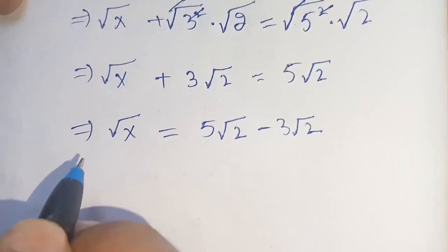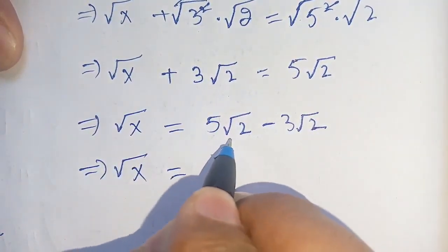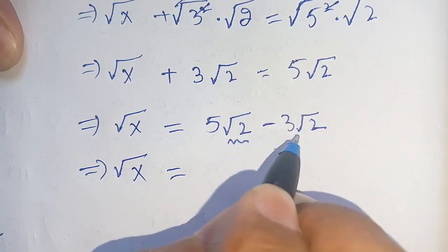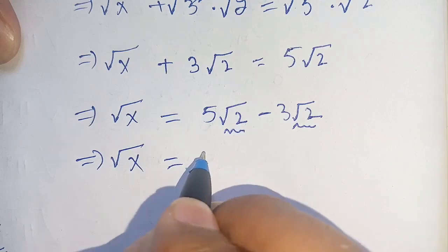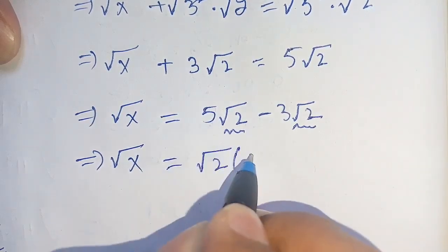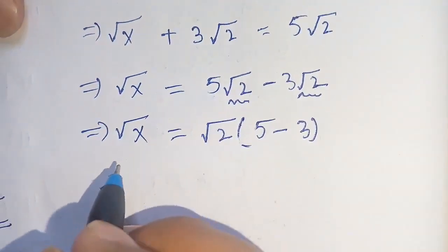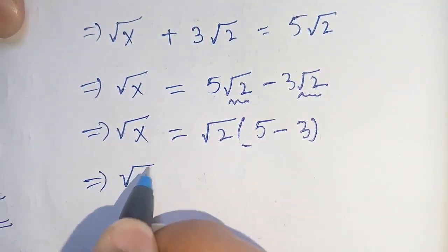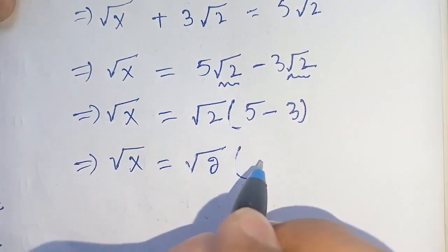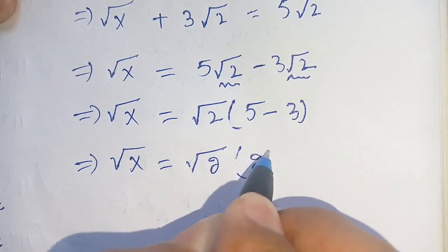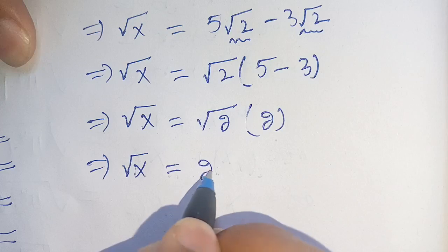In the next step, we factor out square root of 2 from both terms and get: square root of x is equal to square root of 2 times (5 minus 3). So square root of x equals square root of 2 times 2, which equals 2 square root of 2.